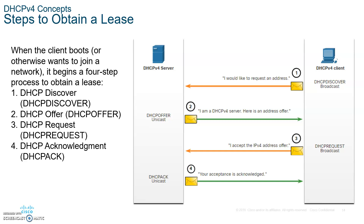Number two: once the client sends that broadcast DHCP Discover, the DHCP servers will respond with a unicast DHCP Offer — unicast means one way. Then the client will unicast back a DHCP Request to the nearest DHCP server; the client picks one offer and sends a request to that server. The DHCP server then sends back a unicast DHCP Acknowledge. So: Discover to all servers, Offer from servers, client picks one and sends a Request, then the server sends an Acknowledgement back.